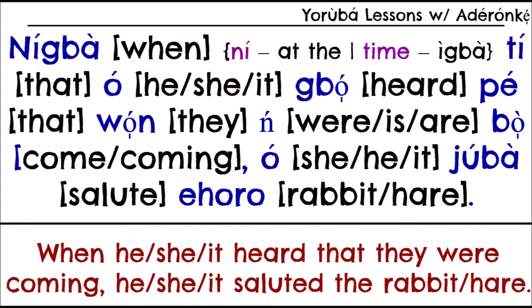So 'nigba ti' means 'at the time that' or 'when.' 'O' means he, she, or it. 'Bo' means to hear. 'Won' means they. When you include 'won' in a sentence, it gives a sense of something happening presently or habitually. So 'won bo' — they were coming. I kept 'were' here to agree with 'they' in English.